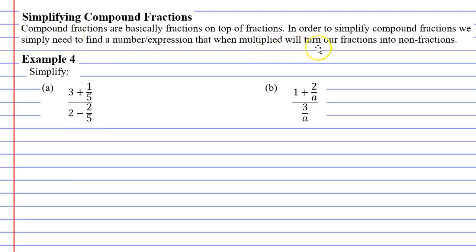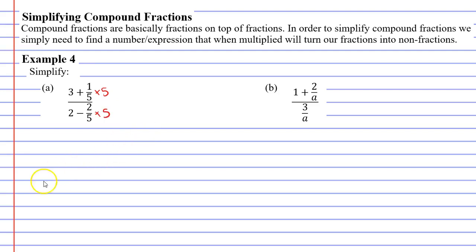We're going to turn our fractions into non-fractions. In the case of question A, we're going to turn our fractions 1 over 5 and 2 over 5 into whole numbers, and the way we're going to do that is multiply them by something. I'm going to multiply the numerator by 5 and, because I'm doing this, I have to multiply the denominator by 5 as well.